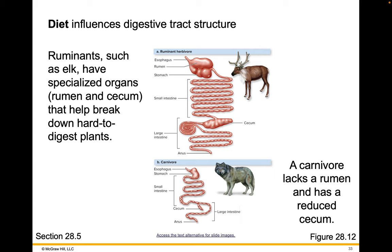Diet influences the structure of the digestive tract. Ruminants like elk have specialized organs — a rumen and a cecum — that help break down hard-to-digest plants. Within these stomachs, ruminants contain huge populations of bacteria and archaeans that break down cellulosic plant materials high in cellulose fiber. It's the bacteria and archaeans that break down those cellulose fibers and release the energy the ruminant can consume. A carnivore lacks a rumen and has a reduced cecum, because they consume very different foods.